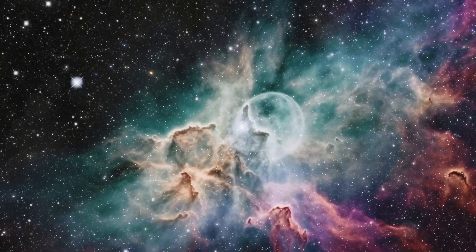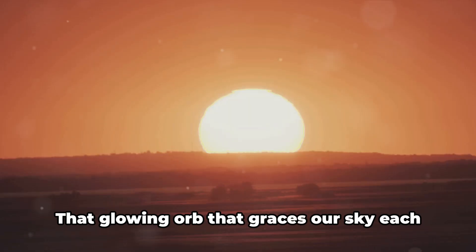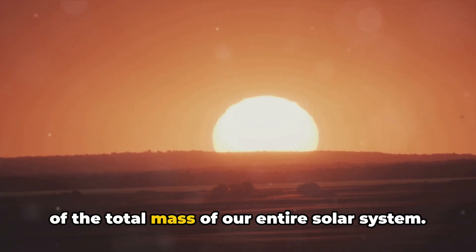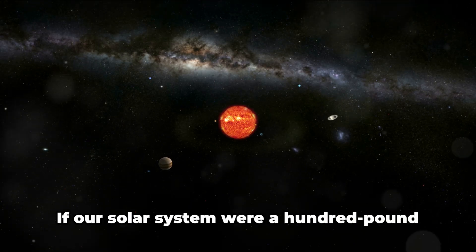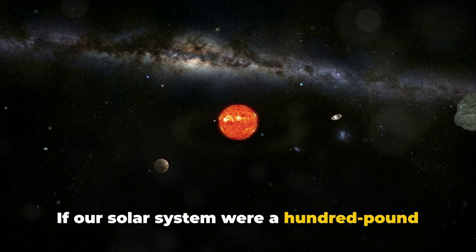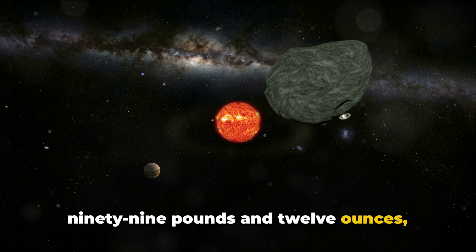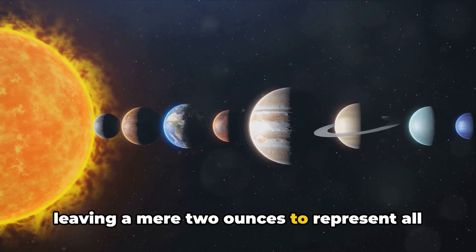Stars and galaxies fill the void. Now consider the sun, that glowing orb that graces our sky each day, providing warmth and light. It represents a staggering 99.8% of the total mass of our entire solar system. If our solar system were a 100-pound person, the sun would weigh about 99 pounds and 12 ounces, leaving a mere two ounces to represent all the planets, moons, asteroids, and comets combined.